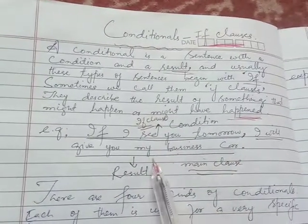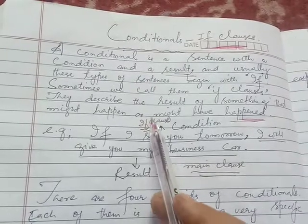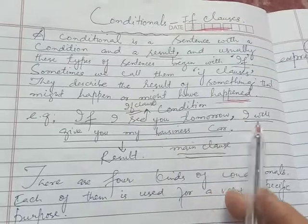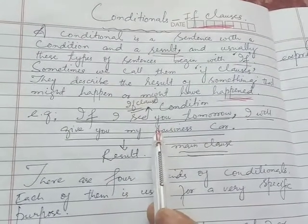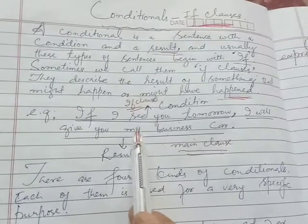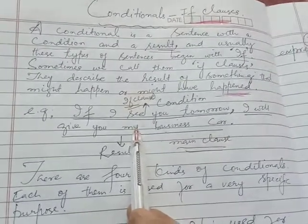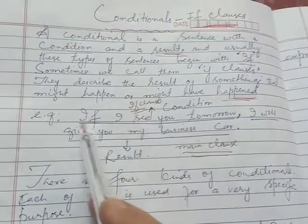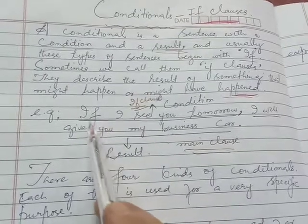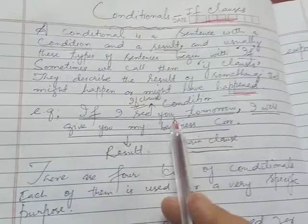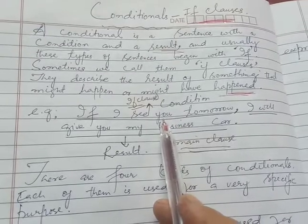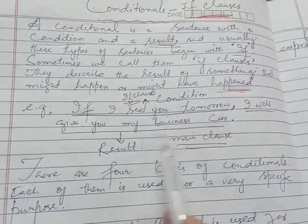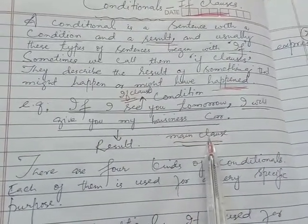Here is an example: 'If I see you tomorrow, I will give you my business card.' A conditional sentence consists of two parts. This part is called the if clause, which is the condition. And 'I will give you my business card' is the main clause, which is the result.